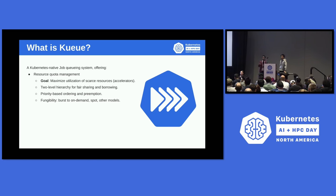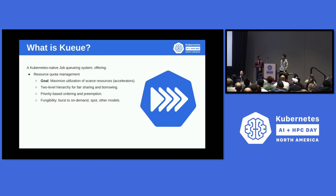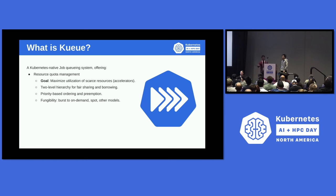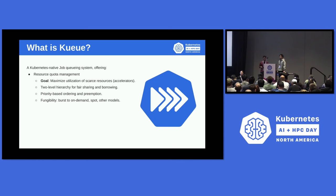Another aspect of Kueue is fungibility. Your jobs might be able to run on a variety of resources — maybe on different models of GPUs, or your cloud provider offers different tiers of availability, like reservations, on-demand machines, or spot VMs. All of these resources your jobs might be able to run on, but you might want to say: I want to consume my reservation first, then on-demand, and so on. All of these concepts can be expressed in a Kueue cluster.